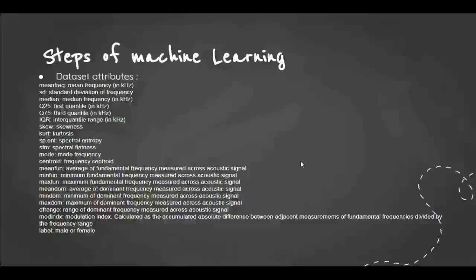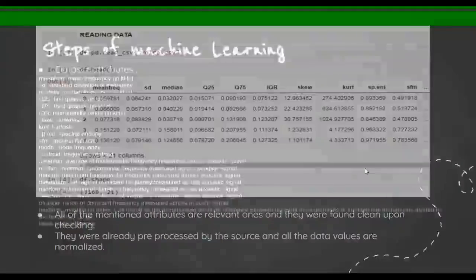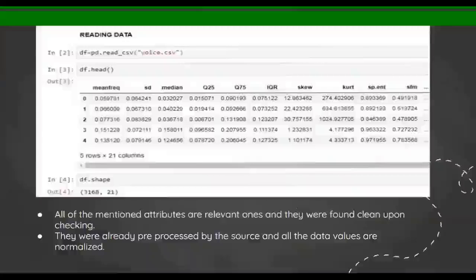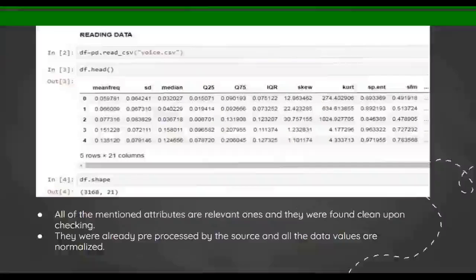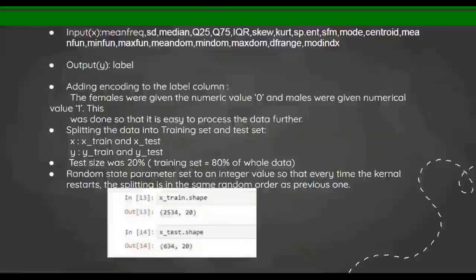Now the implementation: I'm reading the data and it contains 21 columns and 3,168 rows, all of the mentioned attributes, relevant ones. They were found clean upon checking. They were already preprocessed by the source and all data values are normalized.